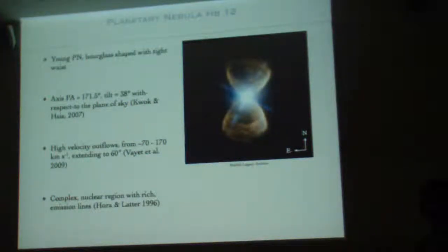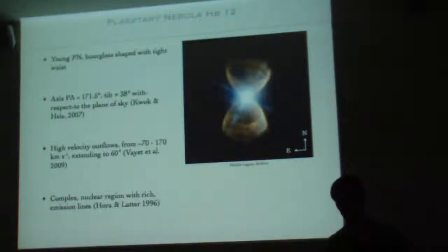HB12 is a young bipolar planetary nebula. It has a tight waist and is prominent in infrared features. It has a position angle of 171.5 degrees and a tilt of 38 degrees with respect to the plane of the sky. It has high velocity outflows as well, from 70 up to 170 kilometers per second, extending out to 60 arcseconds from the nucleus of the nebula. It's also very complex in the center with a lot of rich emission lines.